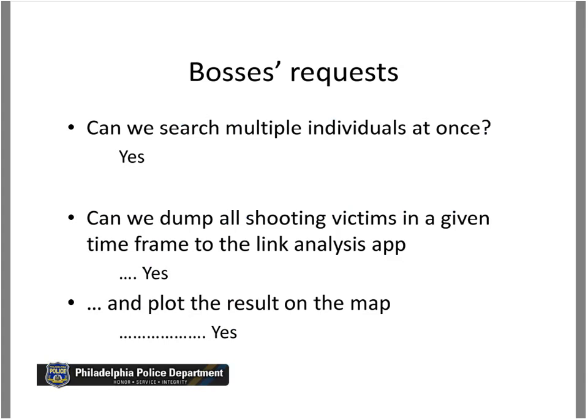Unfortunately, we have approximately 1,500 to 1,600 shooting victims per year, and they wanted to see how those shooting victims may be connected. They also wanted to see the link analysis result on a map, and we were able to respond to that request. My background, Kevin's background, and Matt's background is GIS, so visualizing it on the map personally excited me. I was particularly interested in looking at what the shooting victim pattern from link analysis looks like across Philadelphia.